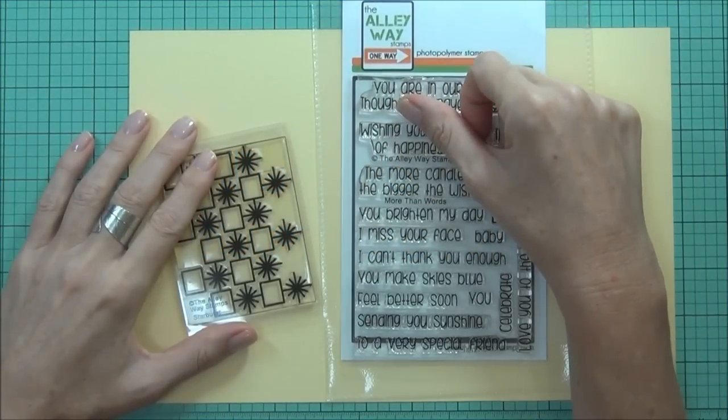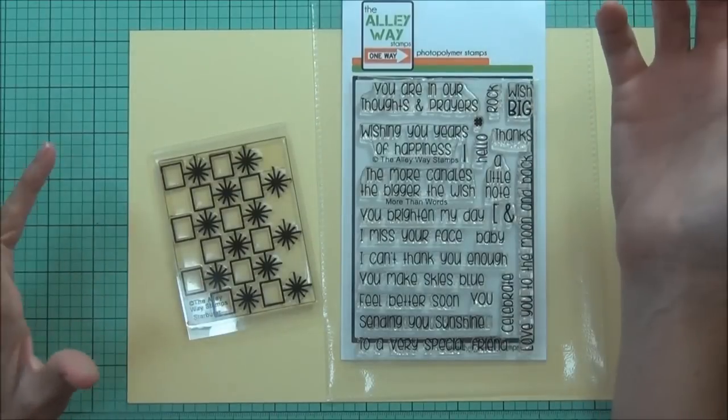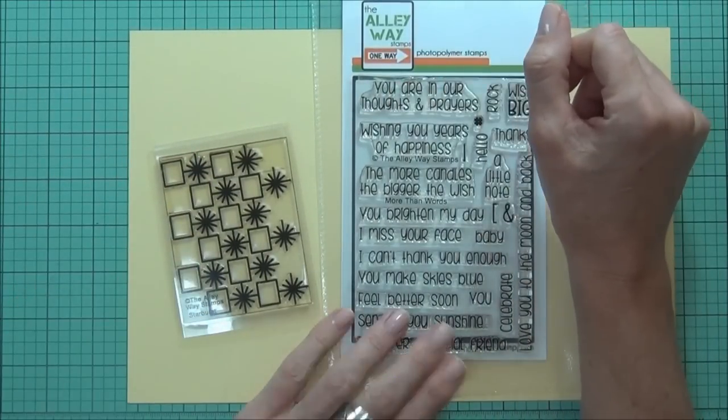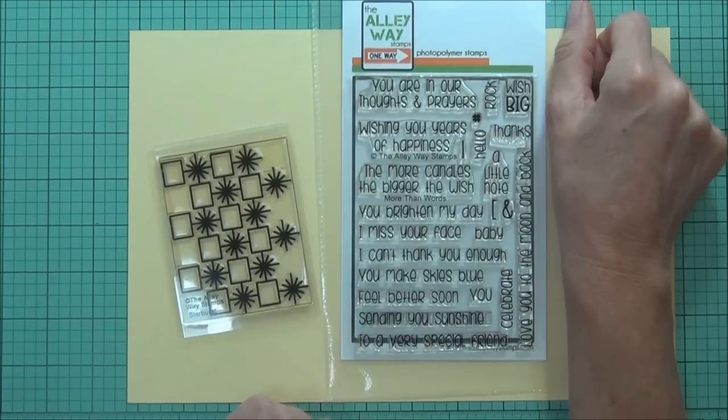Hi, it's Therese from Lost in Paper and I'm back today for Alleyway Stamps. I'm going to make a nice bright fun card using this mini set called Starburst and one of the sentiments from More Than Words.